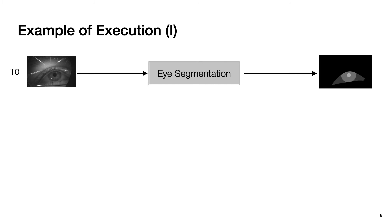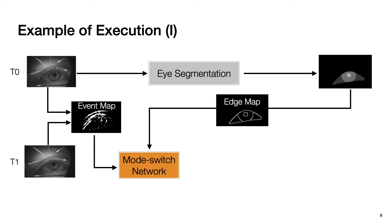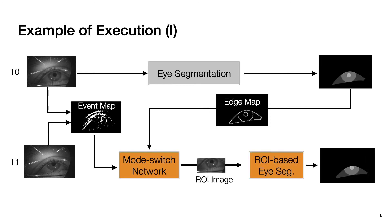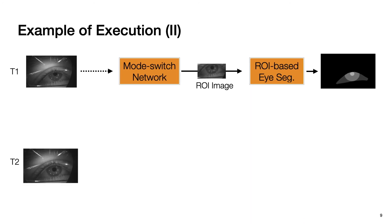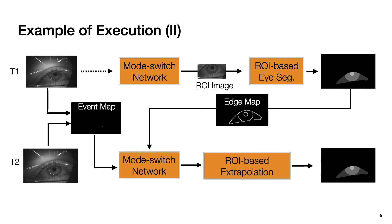Here is an example of executing our pipeline. At time t0, the algorithm always executes full-frame eye segmentation since there is no previous information to predict ROI. At time t1, we emulate the event camera in software and generate an event map from the previous and current image. This event map, along with an edge map from the previous segmentation result, is used in a mode switch network to generate an ROI prediction and crop the full-size image. The cropped ROI image is then used in ROI-based eye segmentation. At time t2, we again generate the event map and edge map, but because there is no event activity in the event map, the mode switch network decides to use ROI-based extrapolation, further reducing computation.